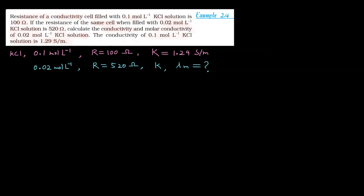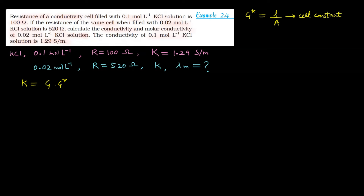तो क्या करेंगे? Values calculate करेंगे। λm की value होती है: λm = κ / c। हमें पहले conductivity निकालनी होगी second वाले solution की। Conductivity कैसे निकालते हैं? Formula है: κ = G × G*। यह G* क्या है? G* का मतलब है l/a — इसको हम बोलते हैं cell constant। जो cell आपने बनाया है, जो electrodes हैं, कुछ length होगी, कुछ area होगा — वो तो fix है। Same cell में कुछ भी डालें, जब तक cell change नहीं करेंगे, उसका cell constant same रहने वाला है। So G* is the cell constant.